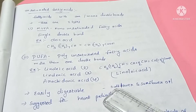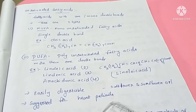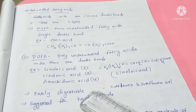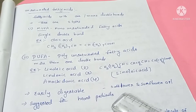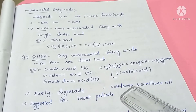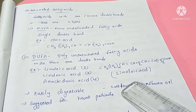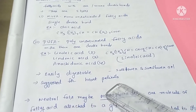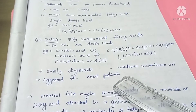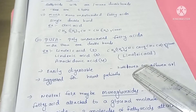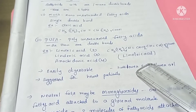Polyunsaturated fatty acids are easily digestible compared to monounsaturated fatty acids. Examples in food are sunflower oil and safflower oil. These are polyunsaturated fatty acids, and doctors suggest polyunsaturated fatty acids for heart patients as a healthy food option.